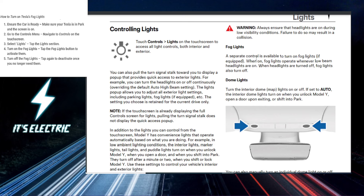In the lights menu, you'll see a button labeled fog lights. Simply tap on that button to turn on your fog lights. Once they're on, a fog light icon will appear on your screen to confirm that they're active.